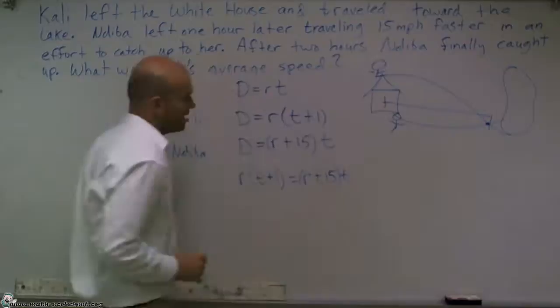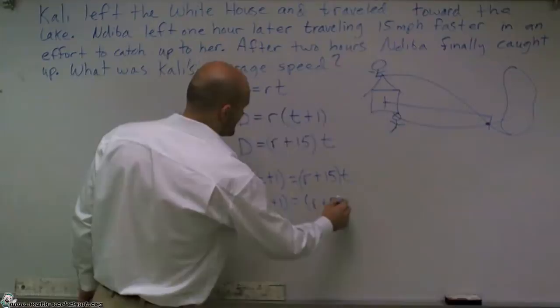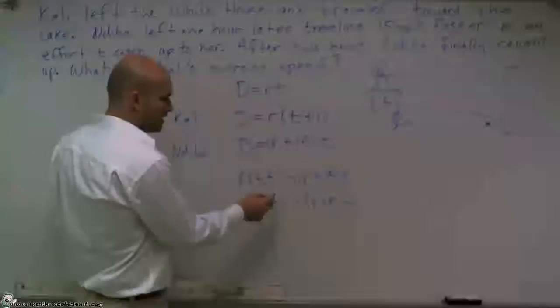And the next thing is this is equal to each other when T was equal to 2. So R times 2 plus 1 equals R plus 15 times 2.